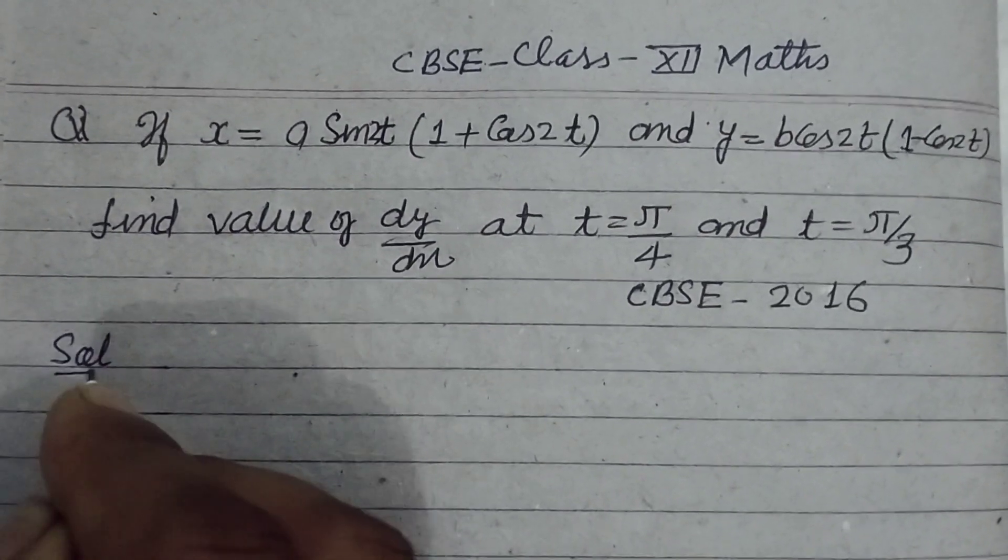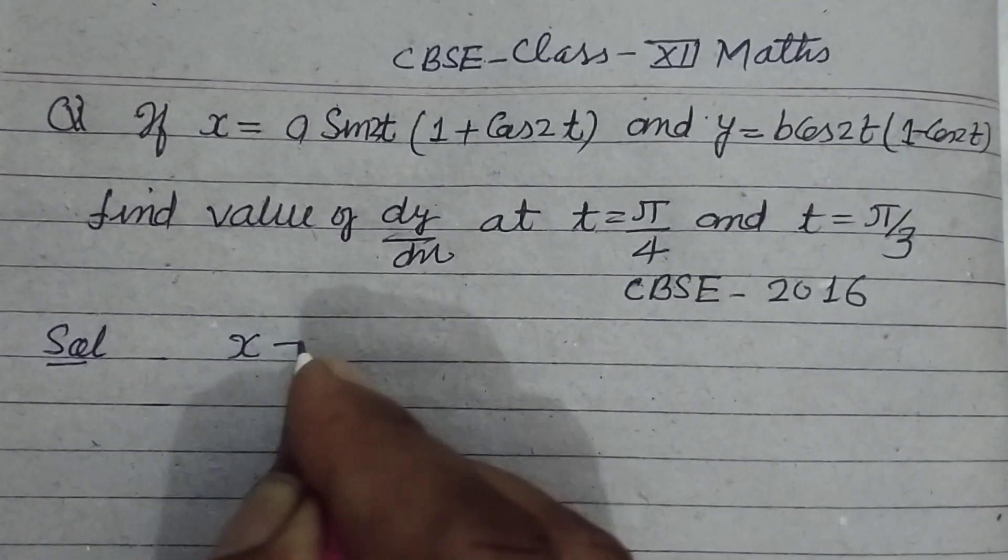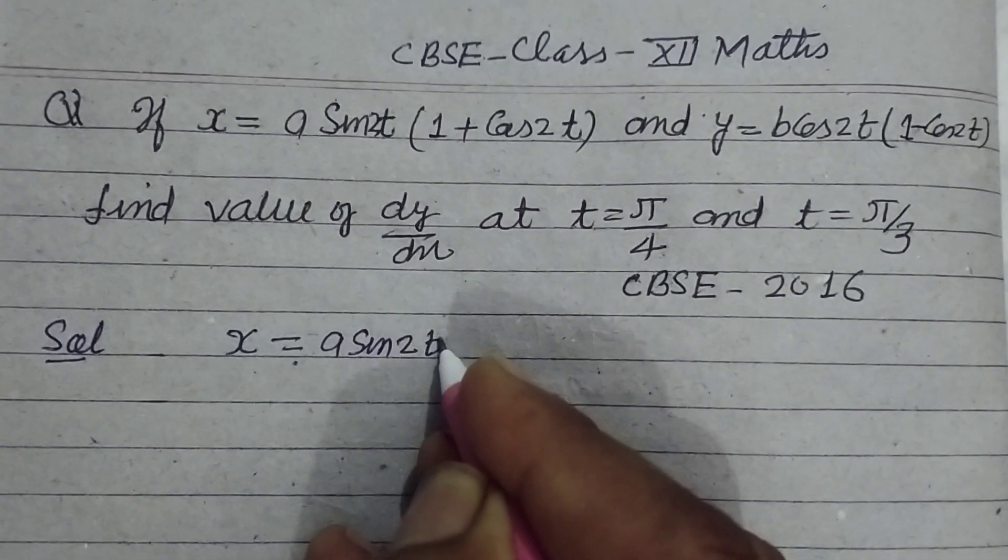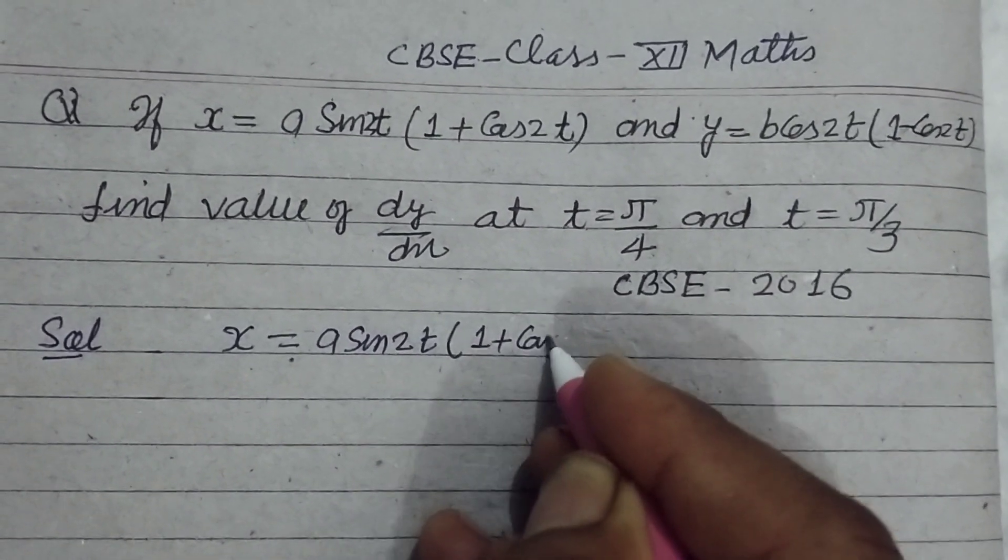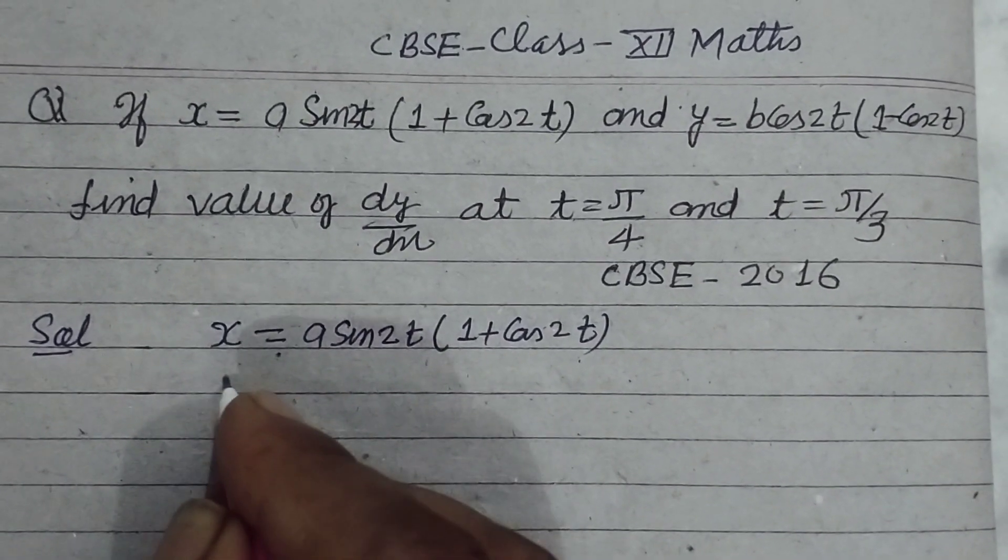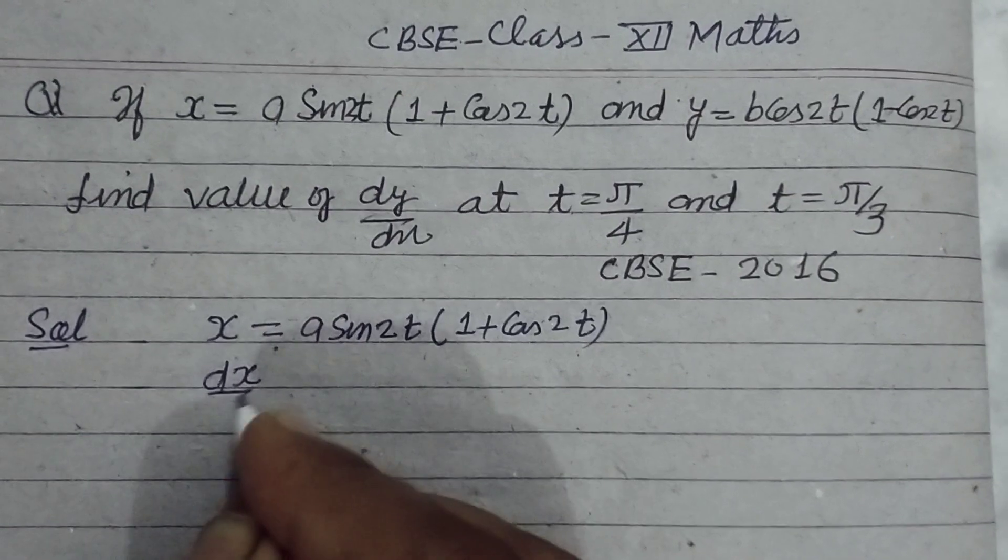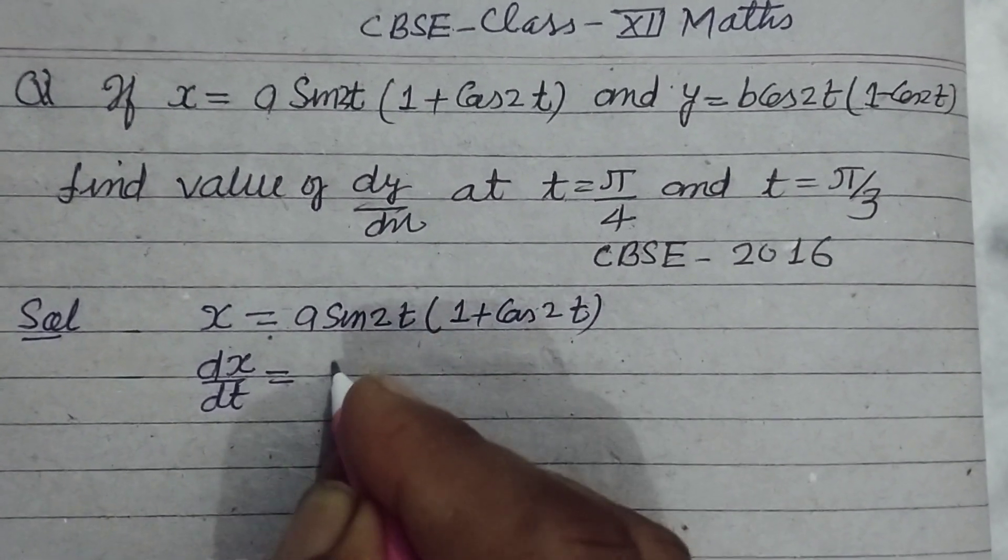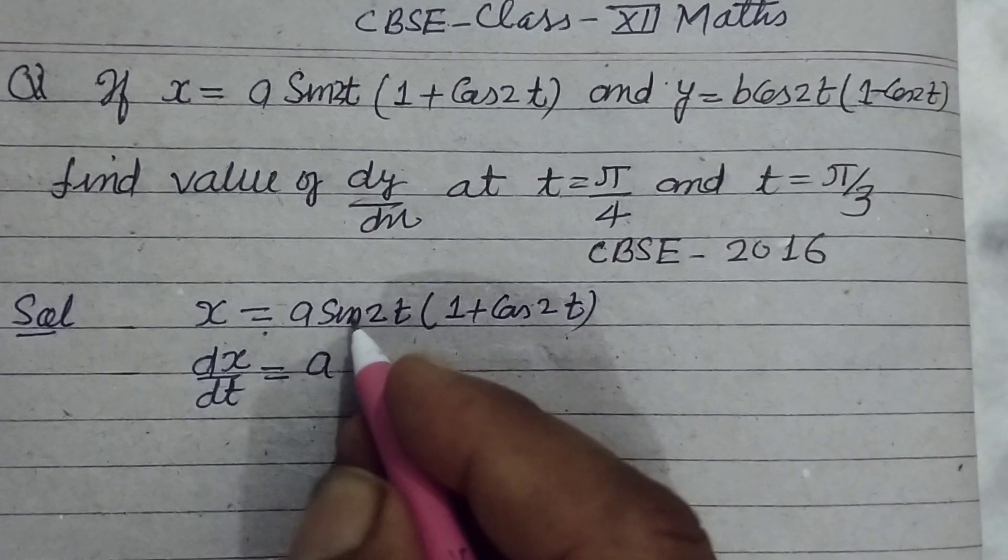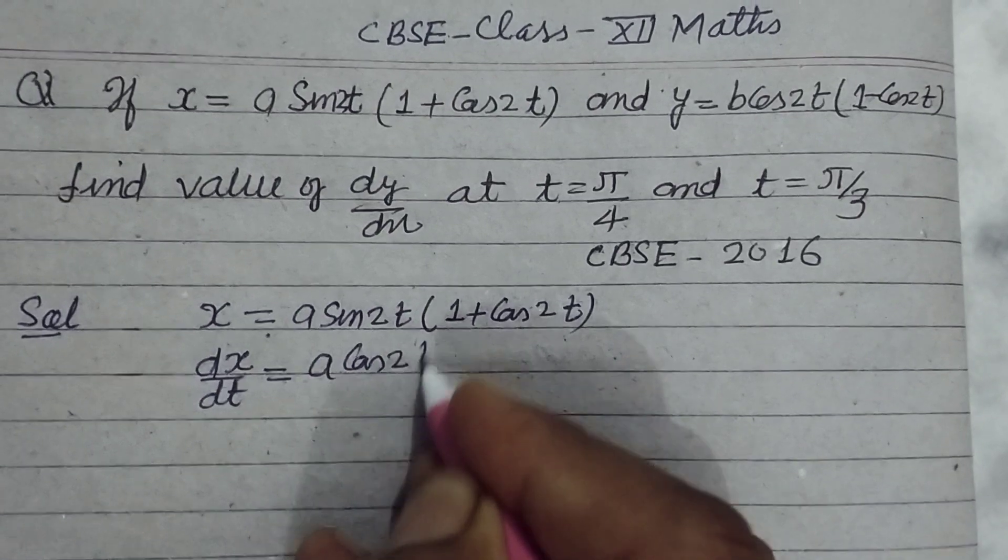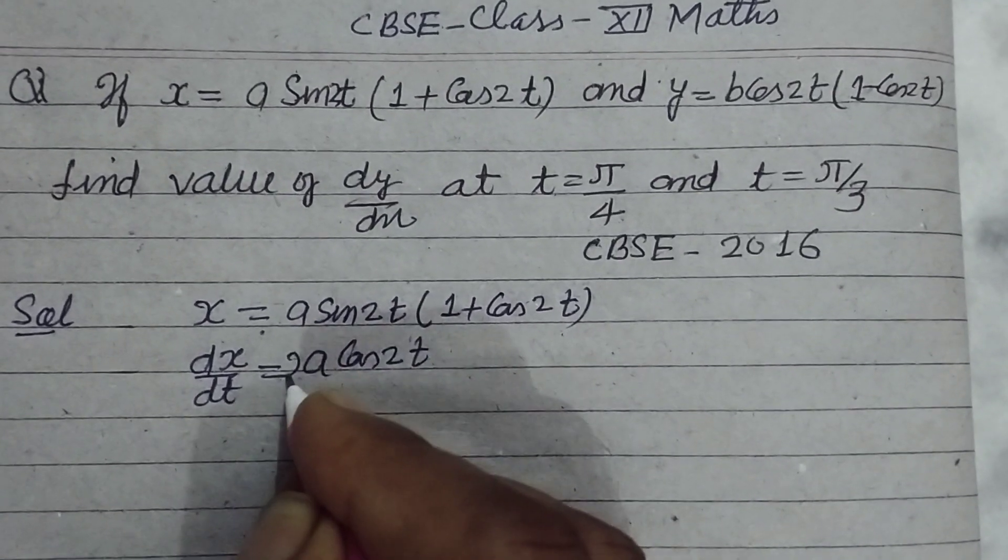So first we have x = a sin 2t (1 + cos 2t). Now differentiating with respect to t, dx/dt: first we take the differentiation of sin 2t which is cos 2t, and of 2t is 2.